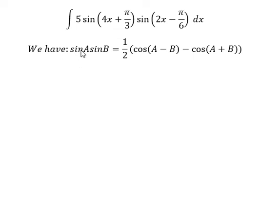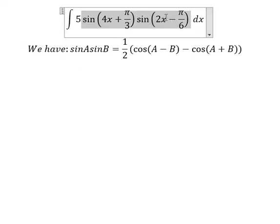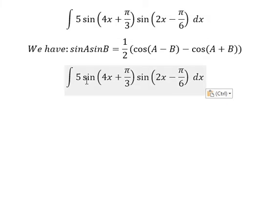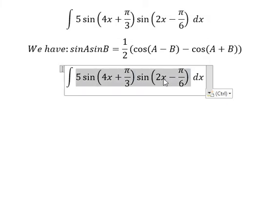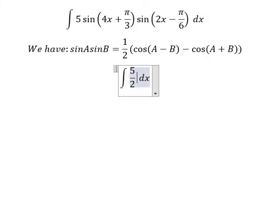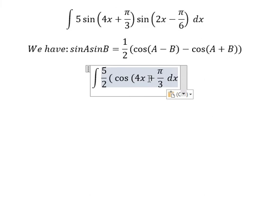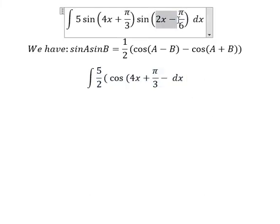So we apply this formula on here and now we will have about five over two, multiply by cosine of A, that's about this one, minus B, that's about this one.